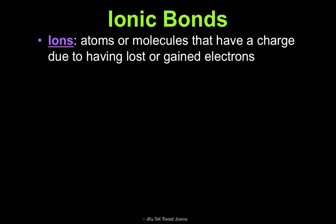What's an ion? Ions are atoms or molecules that have a charge due to having lost or gained electrons. Generally speaking, most atoms are electrically neutral — the number of protons equals the number of electrons, giving them an overall charge of zero. But think of sodium: when it loses one electron, it's gotten rid of one of its negative particles. Thus it has one more positive than negative, so it's no longer electrically neutral — it has a charge of positive one. That's what we mean by ions.